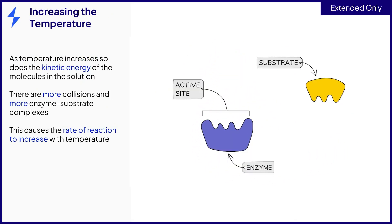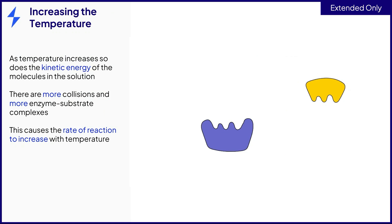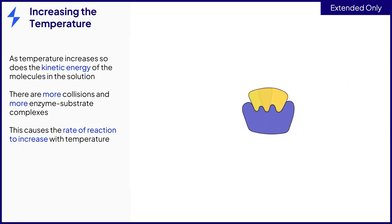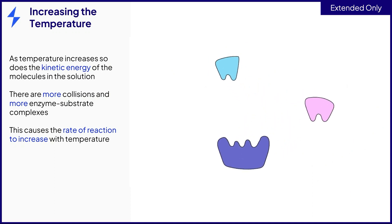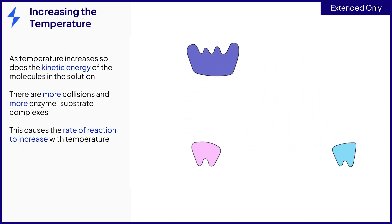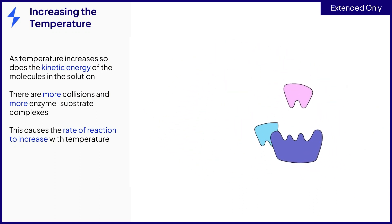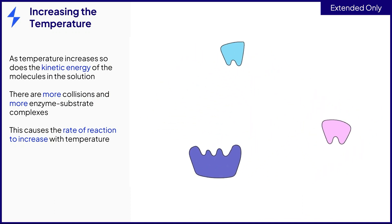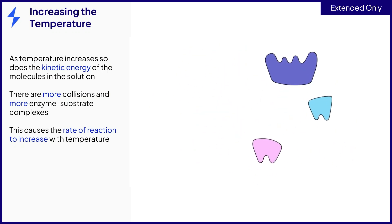The kinetic energy of the molecules in the solution is affected by temperature. As temperature increases, the kinetic energy of the molecules also increases, and the molecules move around much more quickly. This causes there to be more collisions between the enzyme and substrate molecules, therefore more reactions occur and more product is formed.